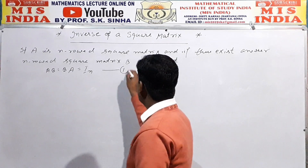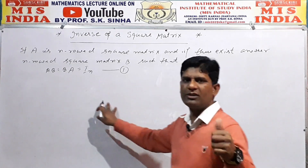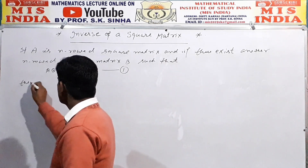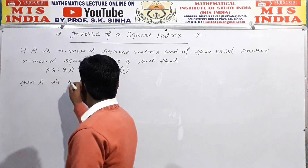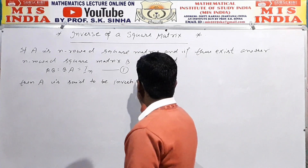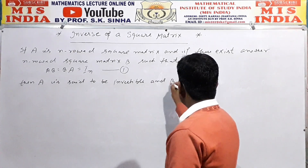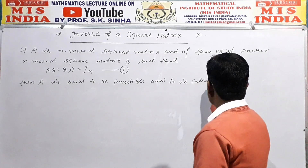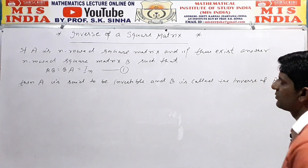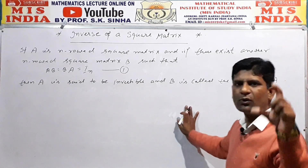If the matrix is 2×2 order, the identity matrix will also be 2×2. If the matrix order is 3, then the identity will be of order 3. So AB equals BA equals I_n, where n is any positive integer. Then matrix A is said to be invertible, and B is called the inverse of matrix A.